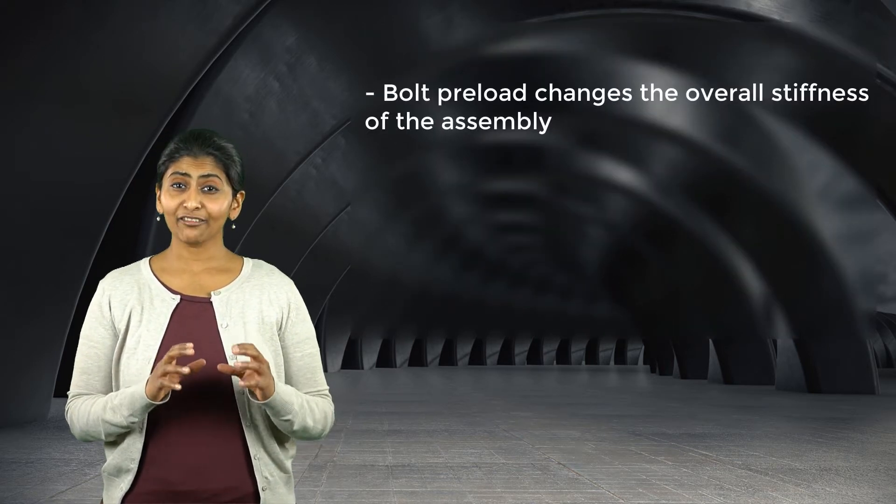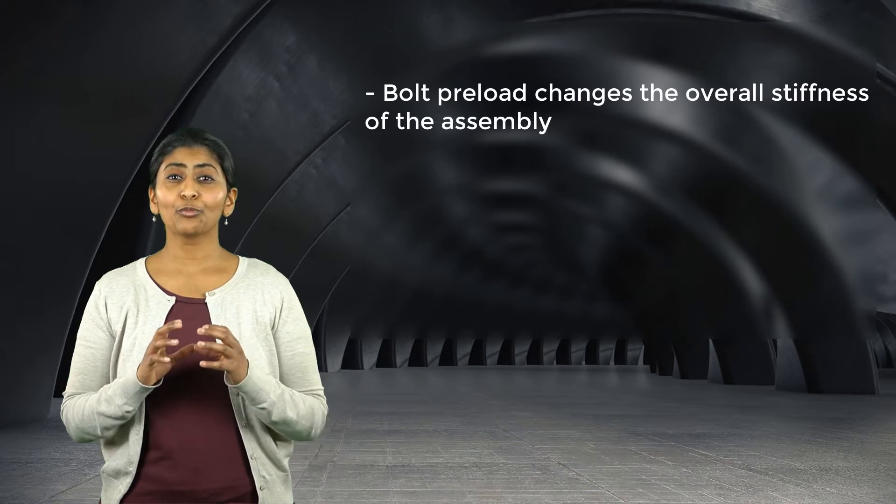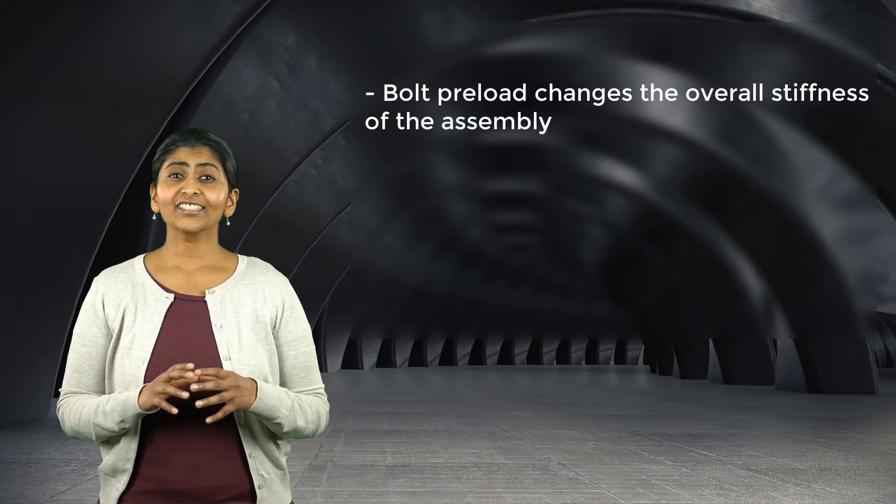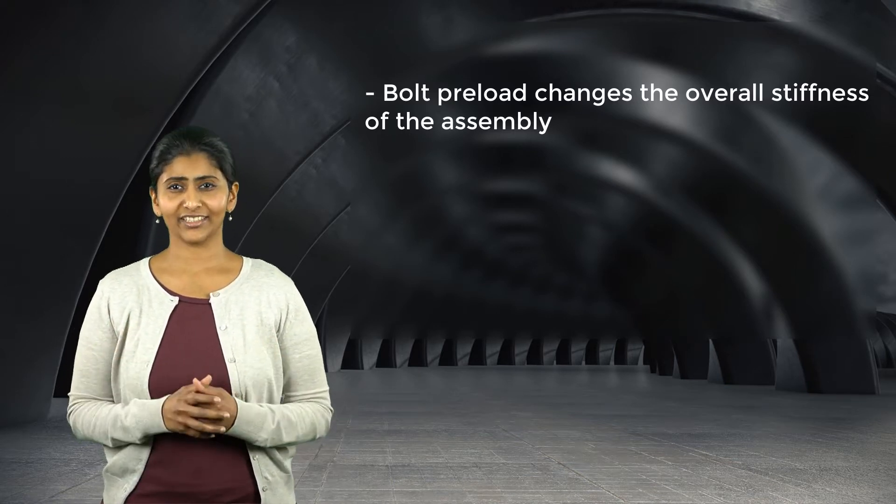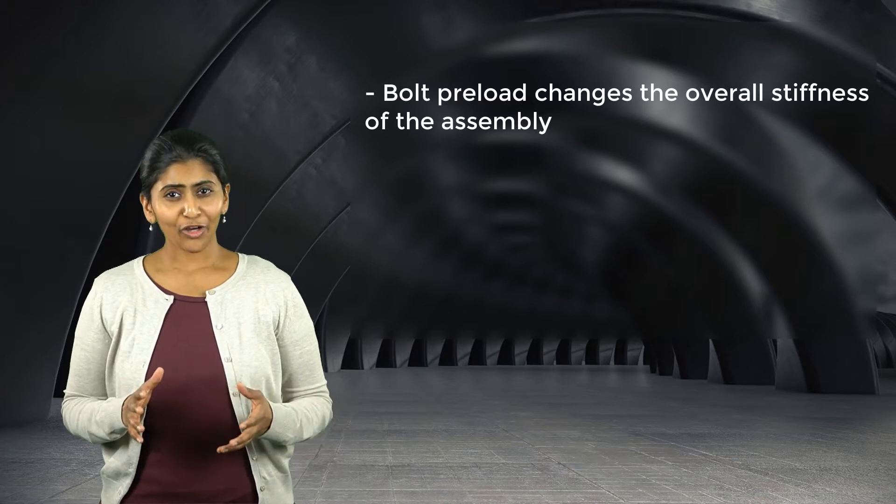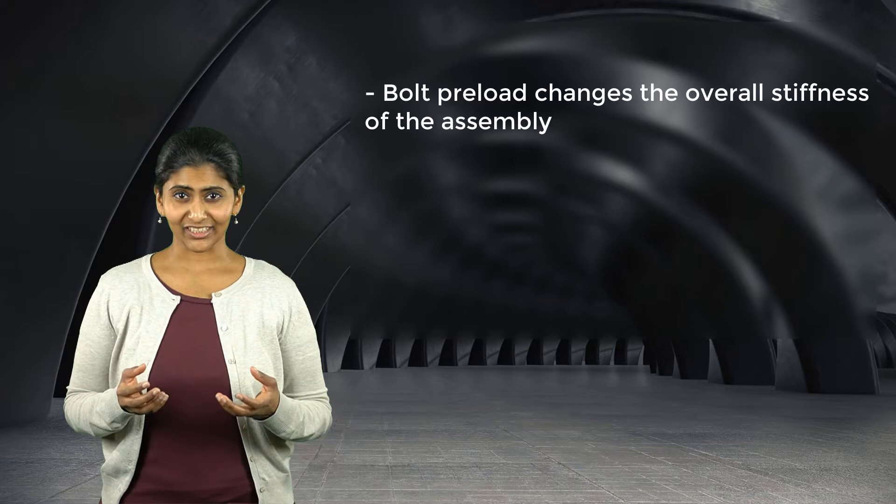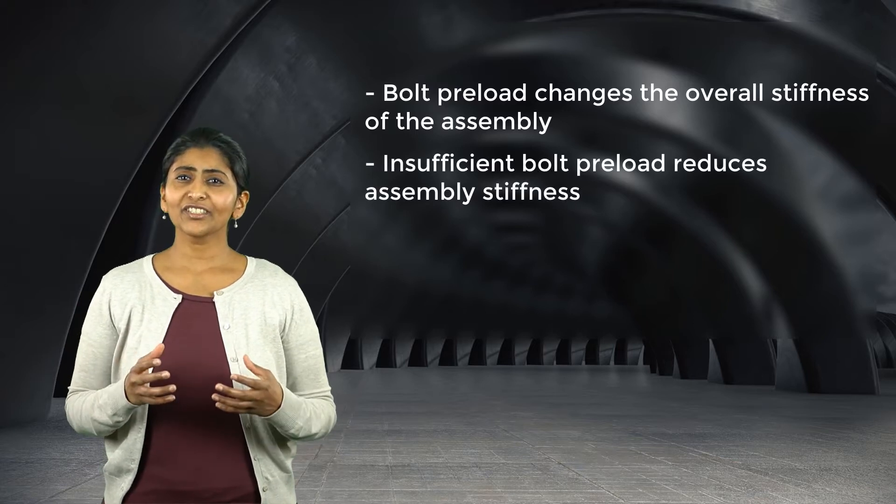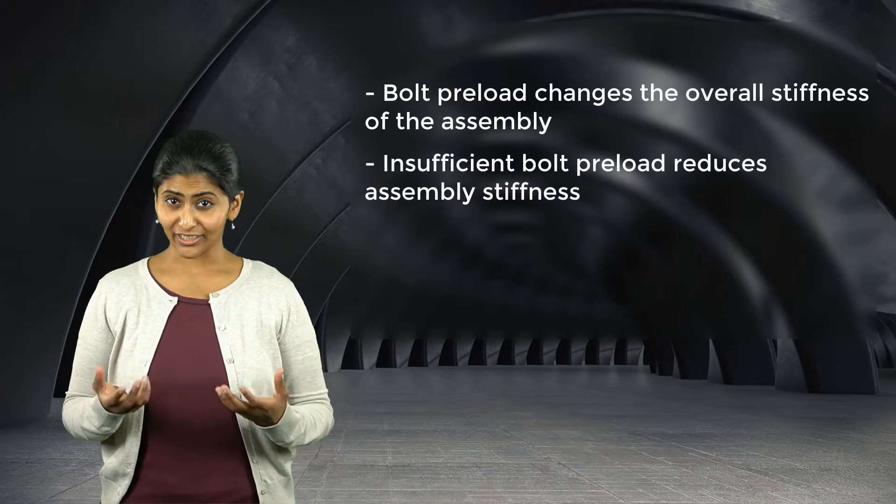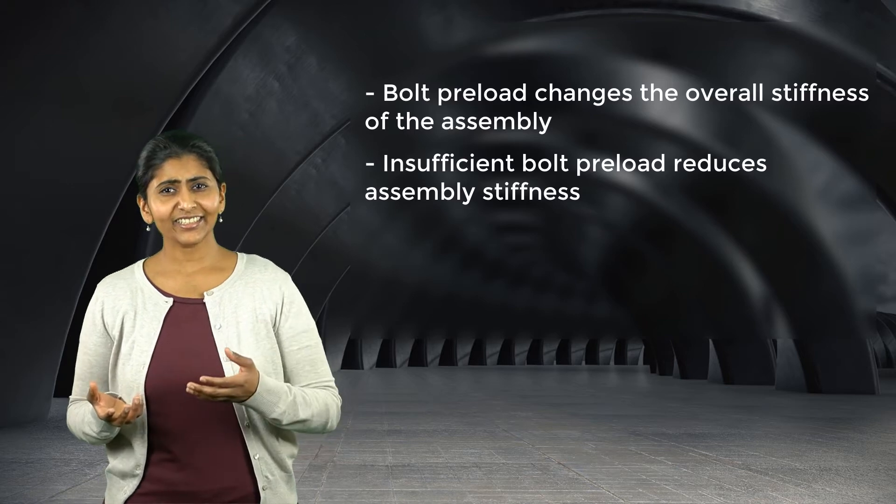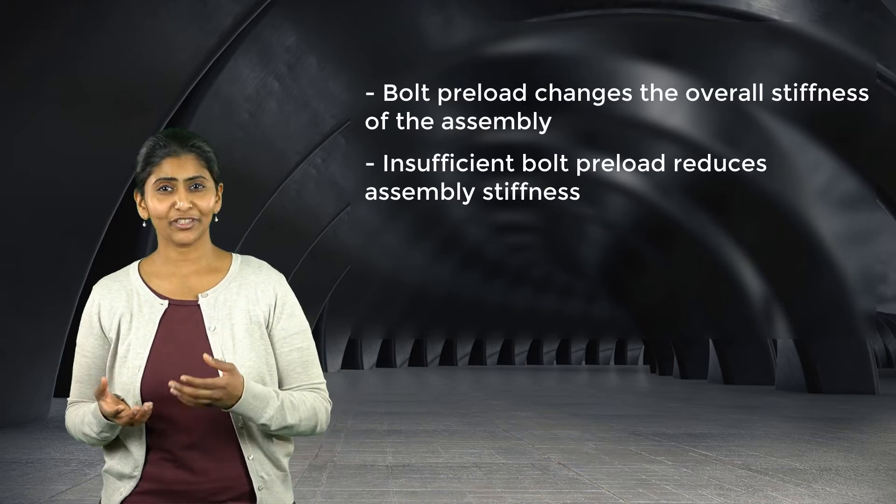This is because the initial stress developed in the assembly due to bolt preload changes the overall stiffness of the assembly. For example, when the applied bolt preload is insufficient, the overall stiffness of the bolted assembly reduces and this in turn changes its natural frequencies. But what's natural frequency and how is it affected by pre-stress?